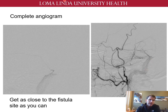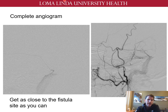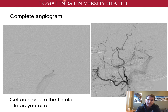The next step is to get as close to the fistula site as you can with your microcatheter. This point can't be overemphasized, as this gives you the best chance to shut down the fistula completely, as opposed to a more proximal embolization that has a higher risk of residual or recurrent arterial feeders. In general, we choose to approach the fistula through ECA branches when possible, since the risk of neurologic deficit is lower than with ICA branches. In this case, we used the MMA to reach the fistula site.